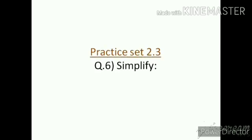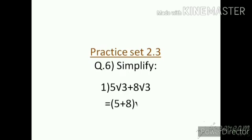Now, Practice Set 2.3, question number 6 — Simplify. First: 5√3 + 8√3. For adding surds, the radicand should be the same. Here the radicand is the same — √3 and √3 — so we can add the coefficients. Equal to (5 + 8)√3. 5 and 8 are the coefficients, and since the radicand is the same, we can add them. Equal to 13√3.